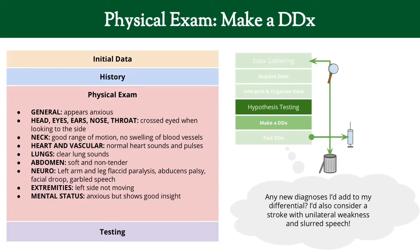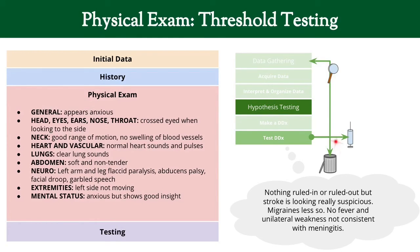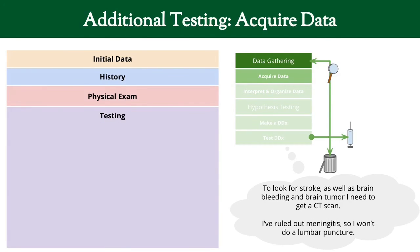Do we want to add anything new to our differential? With unilateral weakness and slurred speech, stroke needs to go on this list. So our differential now includes: stroke, brain tumor, brain bleeding, migraines, and meningitis. Stroke looks very high probability with that left-sided weakness, migraines less so. Meningitis — without a fever and with that left-sided weakness — is starting to look less probable. But I still need more information, so let's order some tests.